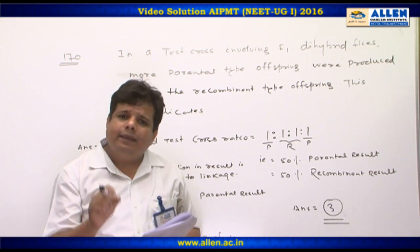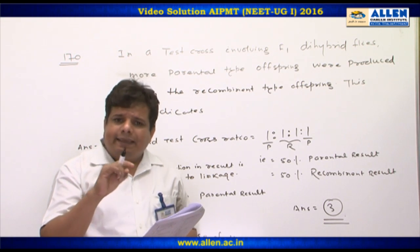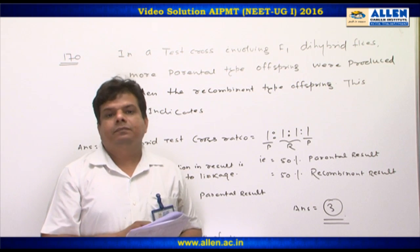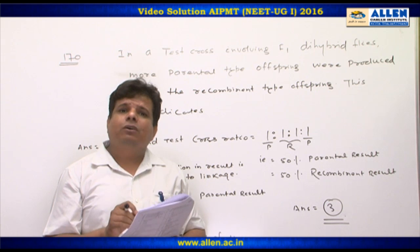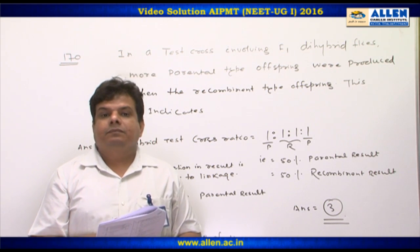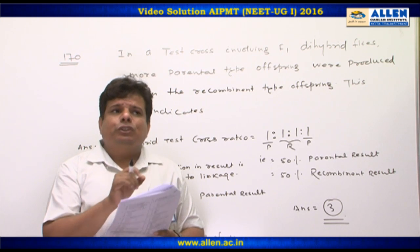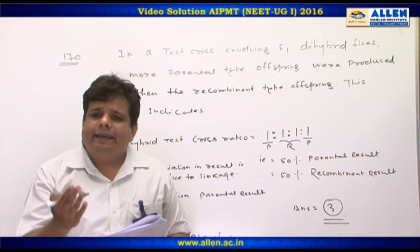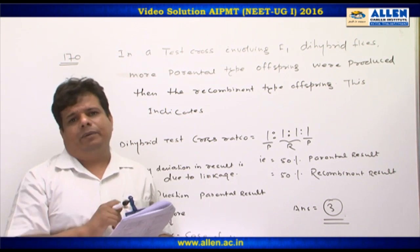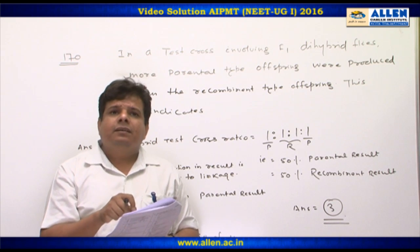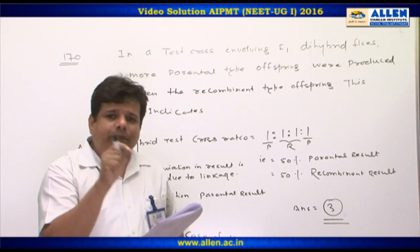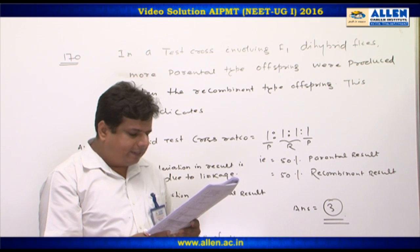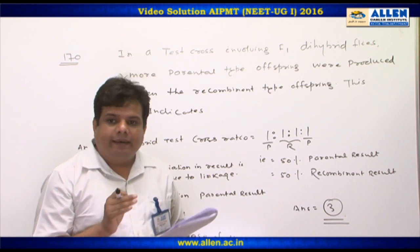Any deviation from the 1:1:1:1 ratio in a test cross of a dihybrid is due to linkage. In the question, it is mentioned that we got more parental results, which clearly indicates it is due to linkage, not independent assortment. In linkage, two genes are present on the same chromosome. Hence, option three — two genes are linked and present on the same chromosome — is the correct answer.